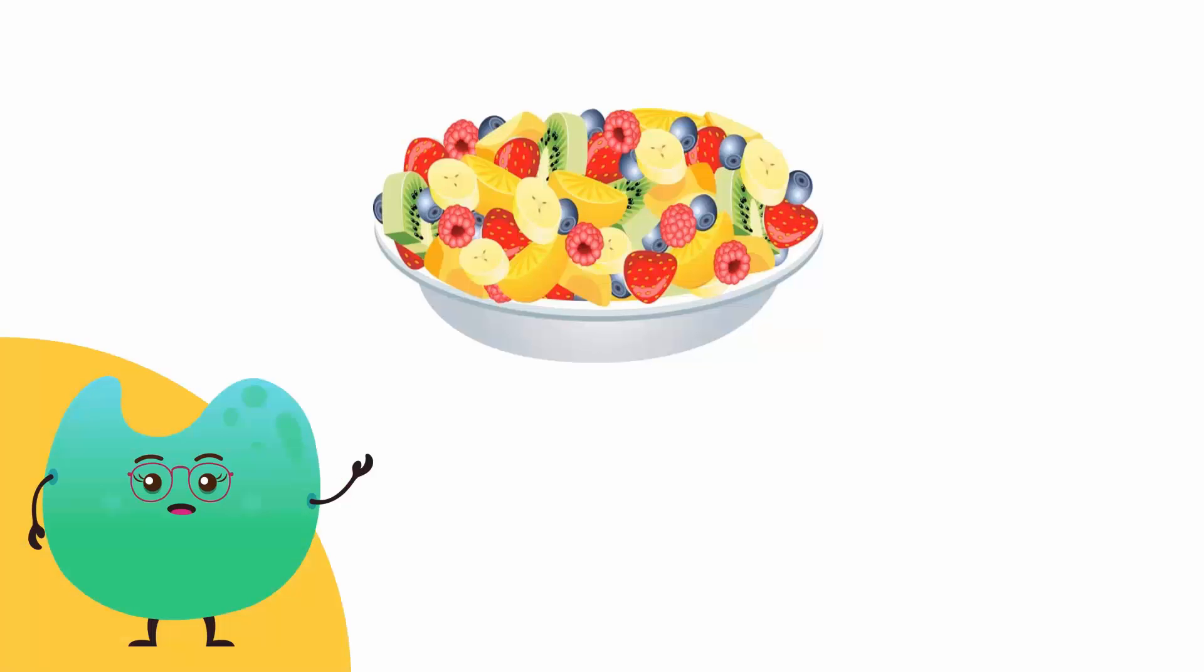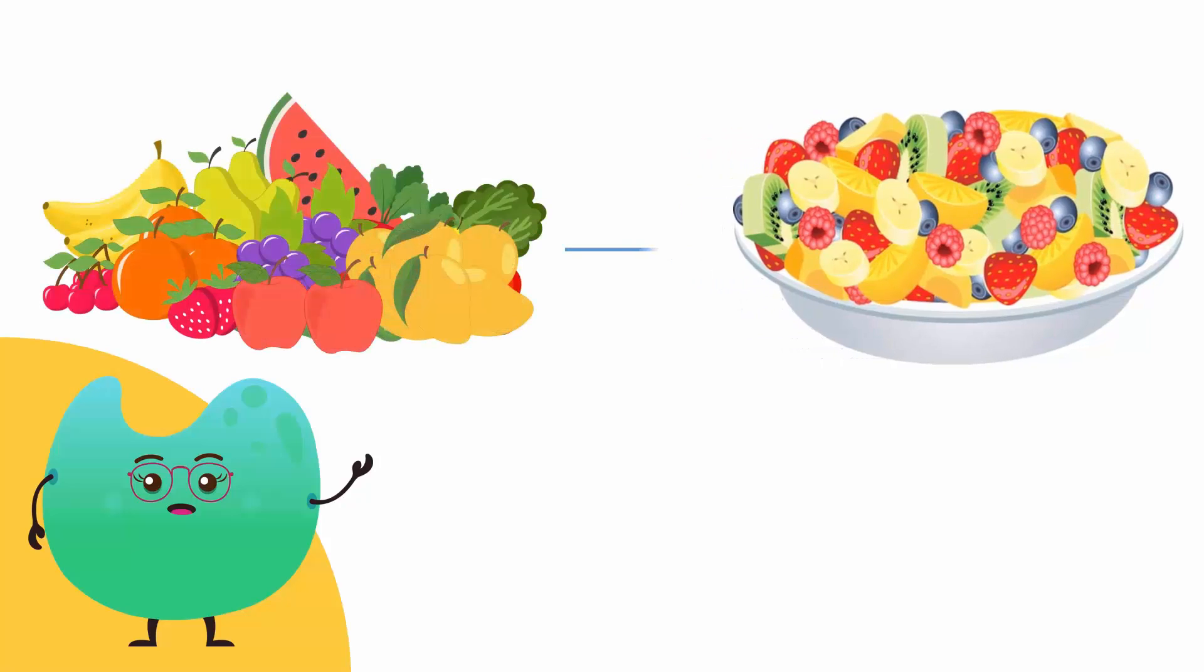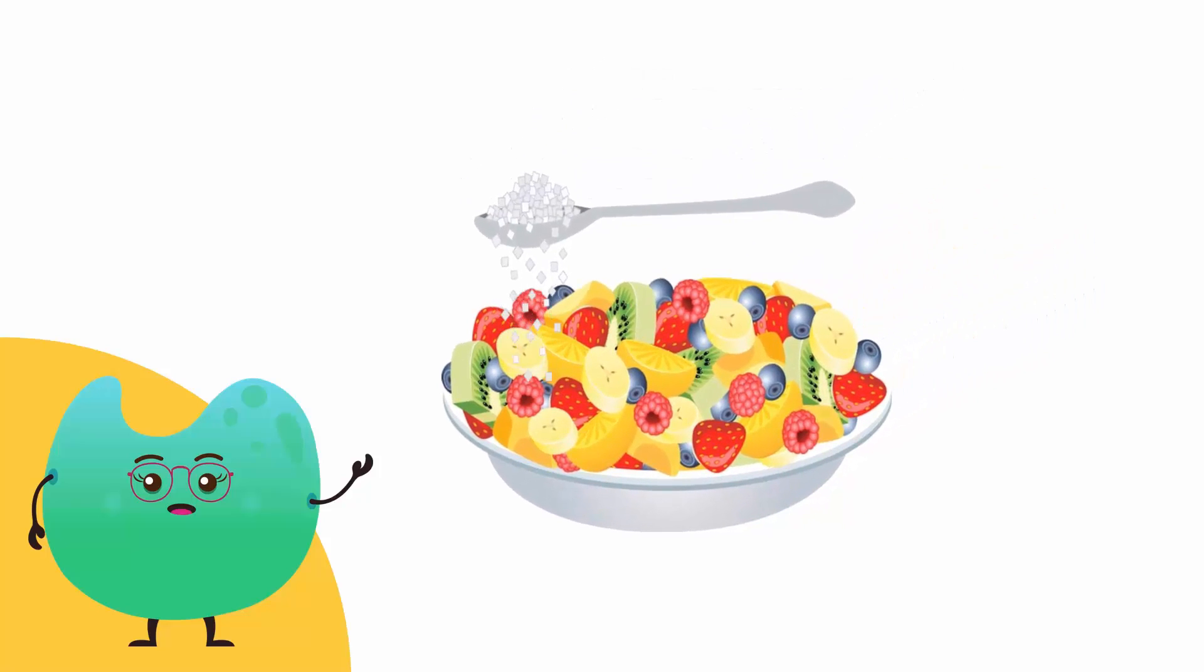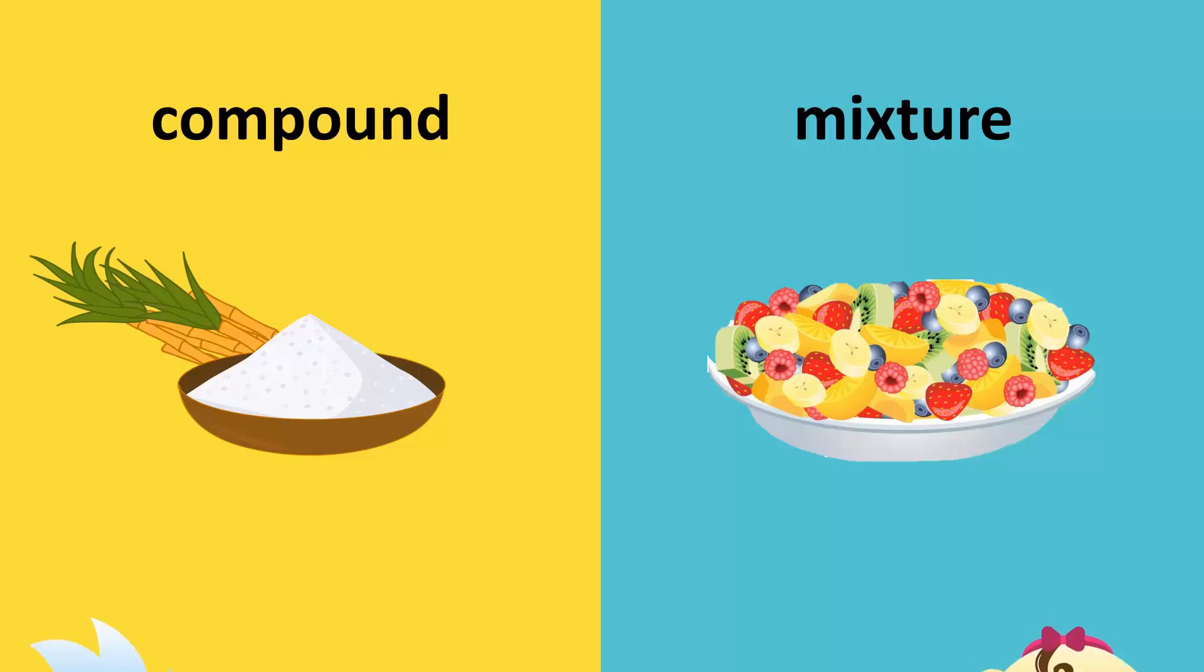Look at this bowl of fruit salad. What do you see? When we mix different fruits together like this we get a fruit salad. Now I don't know about you but I like adding sugar in my fruit salad. Fruit salad is a mixture and sugar is a compound. But what do these words mean?